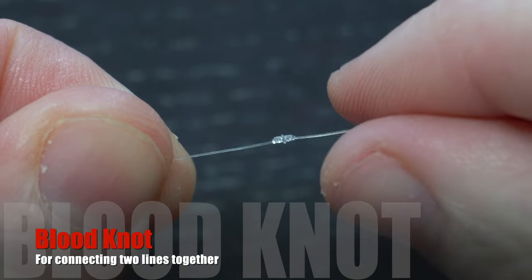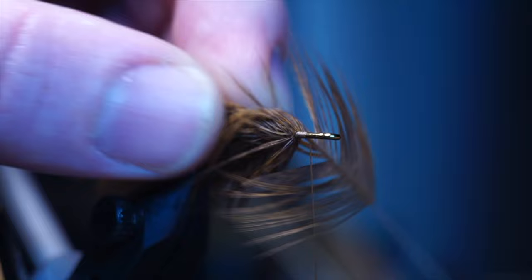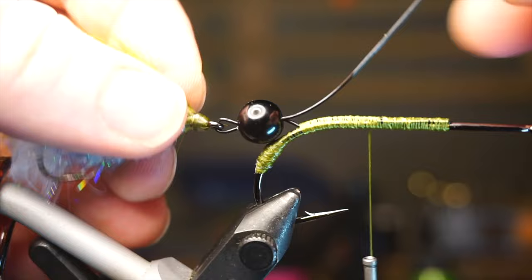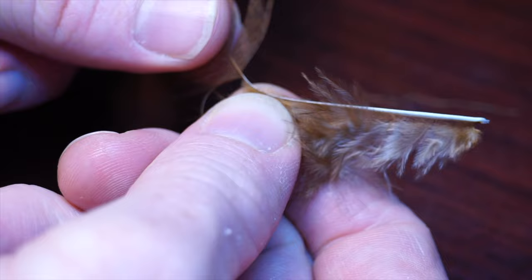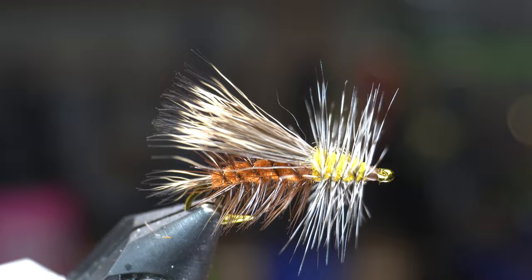Today I will show you how to tie the blood knot, one of the thinnest knots you can tie to attach tippet to your leader. This is McFly Angler. And it starts now.